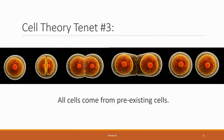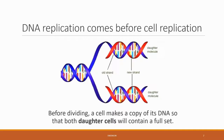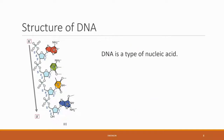Cell reproduction is focused on the processes of one of the tenets of cell theory we have discussed — that all cells come from pre-existing cells. Before cells embark on cellular division, they must first replicate essential cellular components so that the new cells are equipped to survive. One of these essential components is their genetic blueprint, DNA.